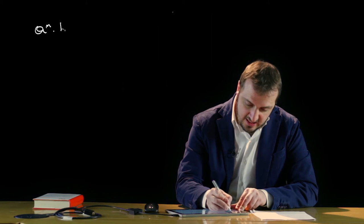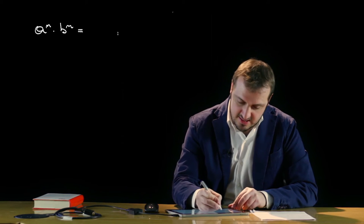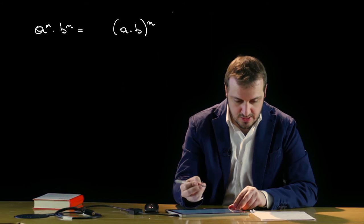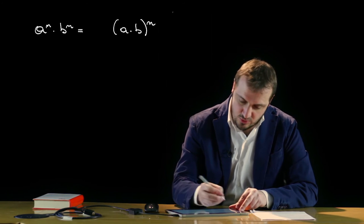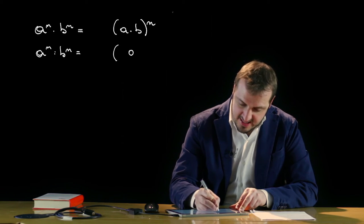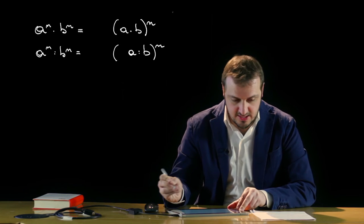Poi abbiamo altre due proprietà molto importanti che riguardano il prodotto di potenze caratterizzate dal medesimo esponente. In questo caso avremo a alla n per b alla n che sarà pari a una potenza che ha per base il prodotto delle basi, quindi a per b, e per esponente il medesimo esponente. Il discorso analogo riguarda il quoziente di potenze di uguale esponente, quindi a alla n diviso b alla n, che è uguale a una potenza che ha come base il rapporto tra le due basi e come esponente il medesimo esponente.